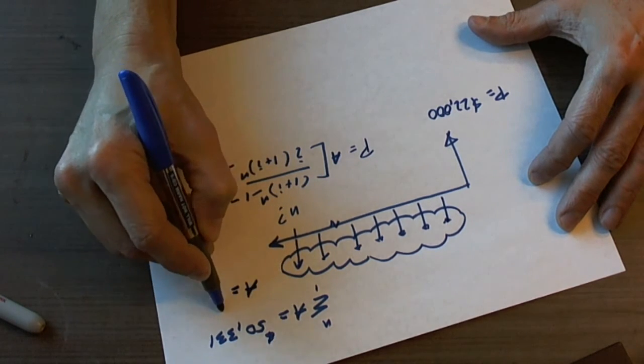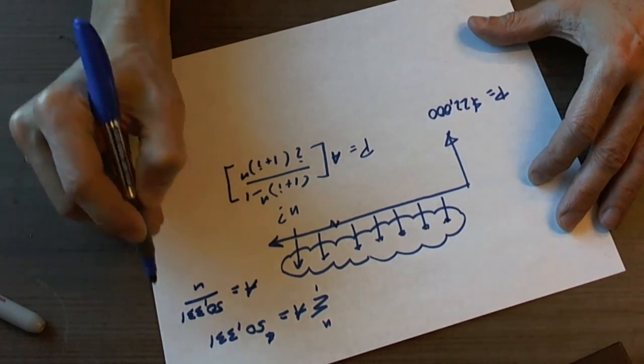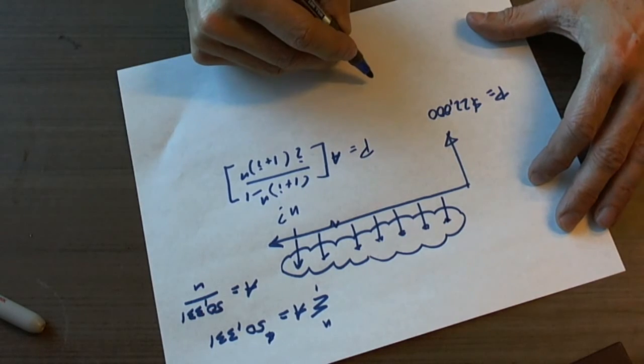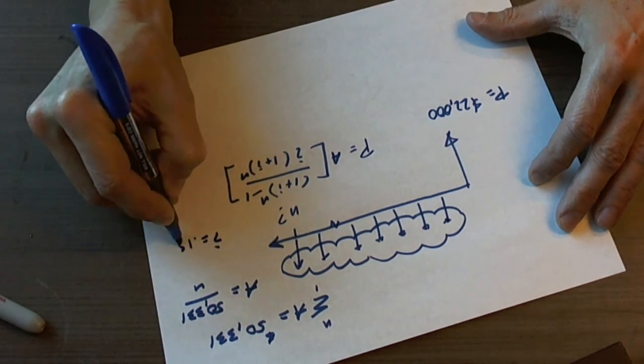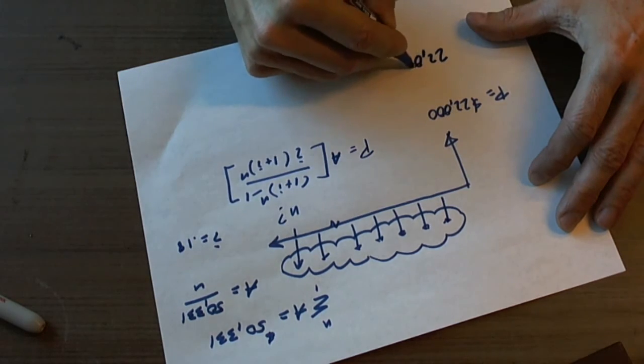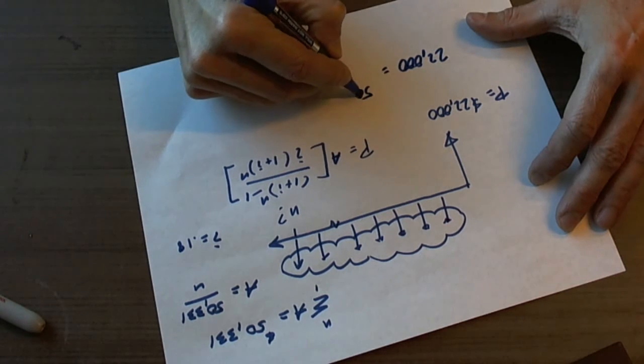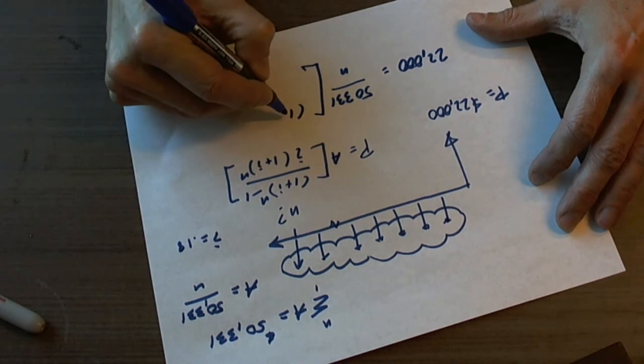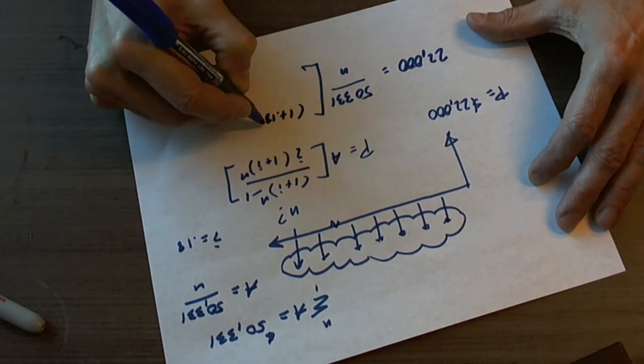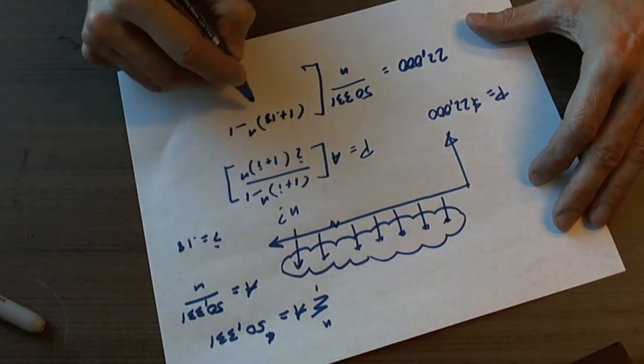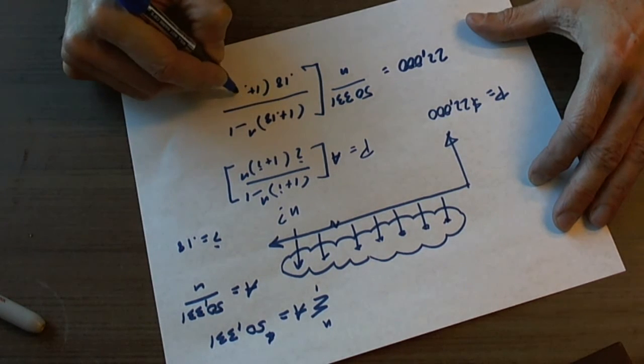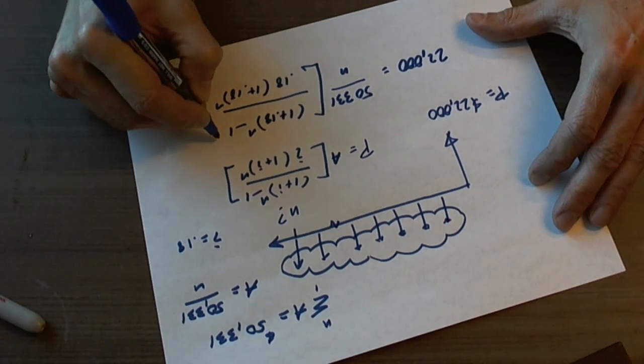Substituting the known values into this equation gives us 22,000 equals 50,331 over n times (1 plus 0.18) raised to the n minus 1, all over 0.18(1 plus 0.18) raised to the n.